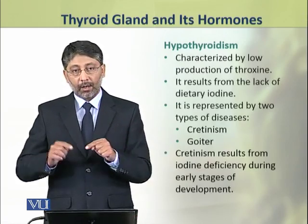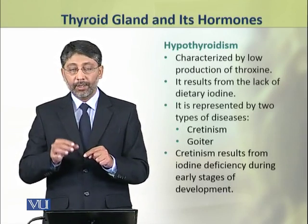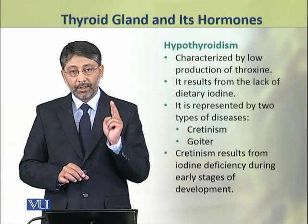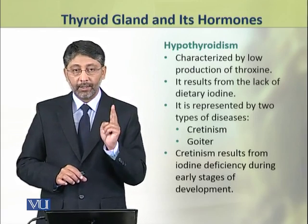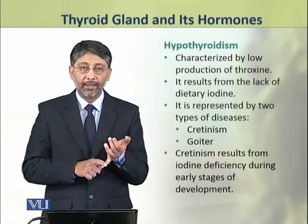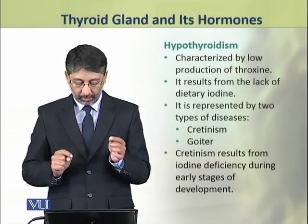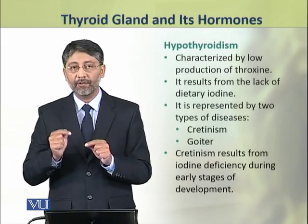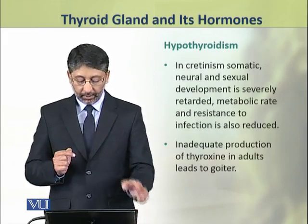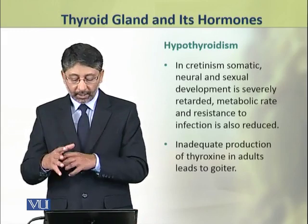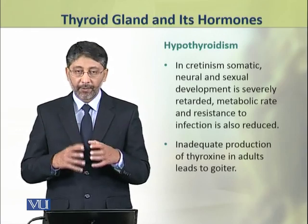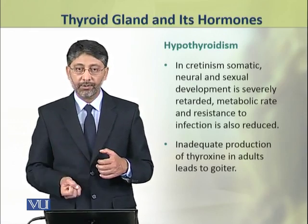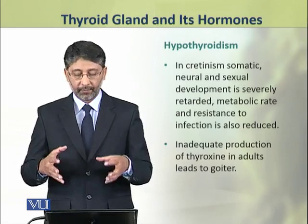Hypothyroidism, that is the production of thyroid hormones in low quantity, results in two diseases. These include cretinism and goiter. Cretinism results from iodine deficiency in early stages of development. In cretinism, the somatic, neural, and sexual development of a person is severely affected. Moreover, metabolic rate is reduced and resistance to disease is also reduced.